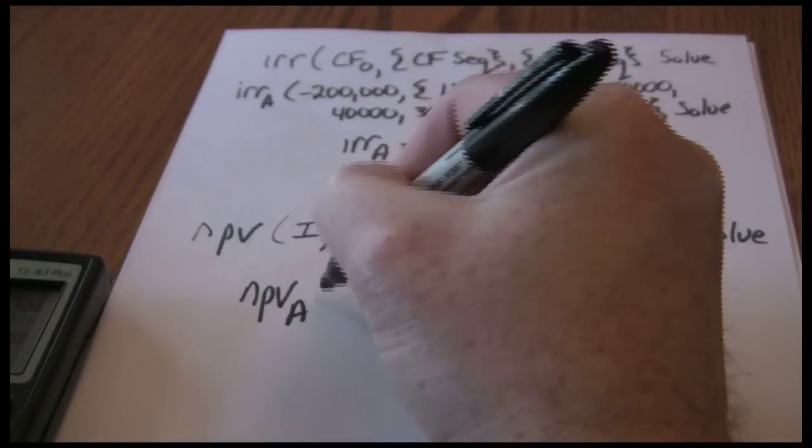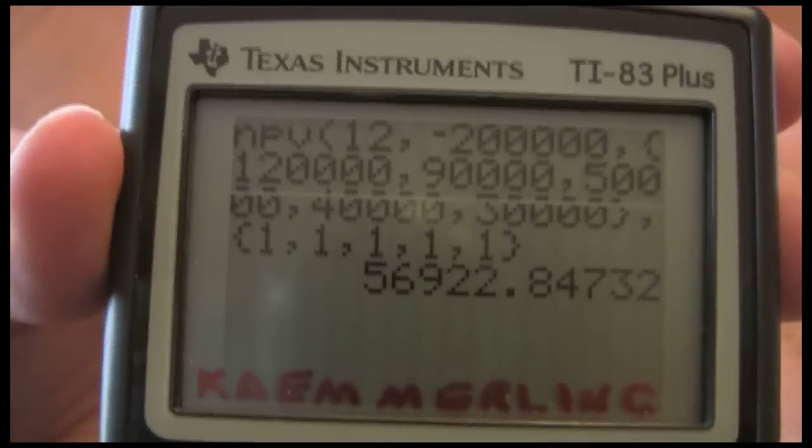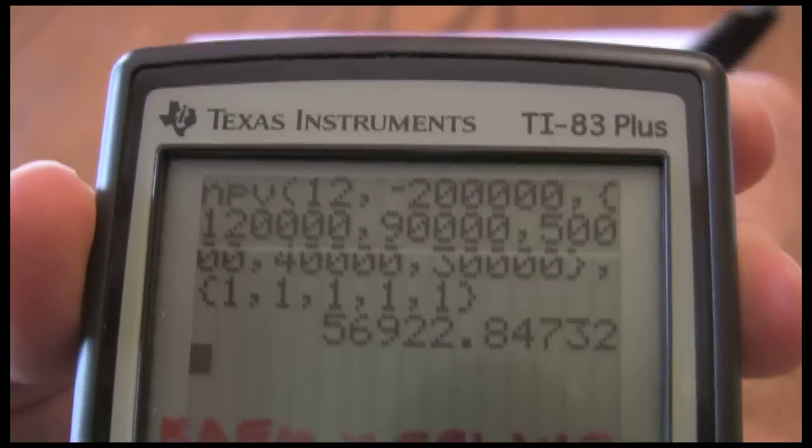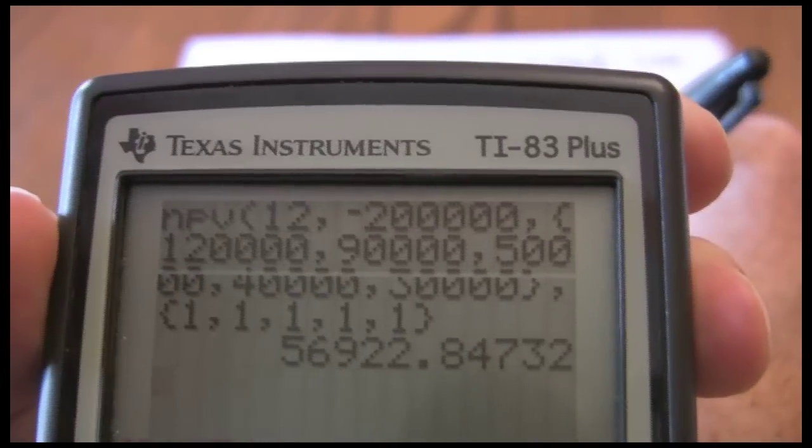That net present value for project A: $56,922.85.